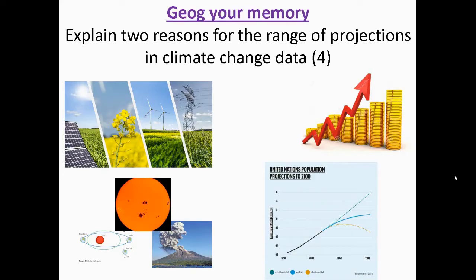Have a look at a question from the Paper 1 exam. It's from the first topic within the Paper 1 exam, so hazardous earth. So the question says, explain two reasons for the range of projections in climate change data.